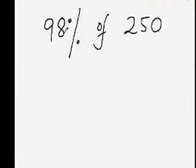98% is nothing but 100% minus 2%. 100% of 250 is 250, and 1% would be 2.5. Decimal will shift two places towards the left, so 2% would be 5. So 250 minus 5 would be 245, that is what the answer is.